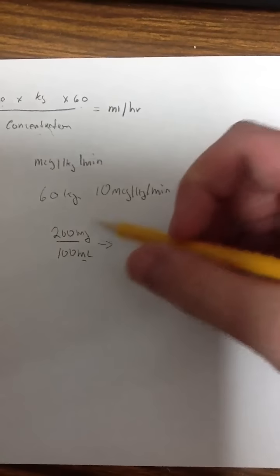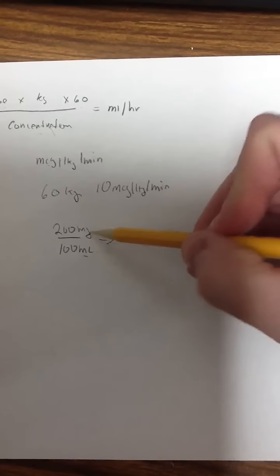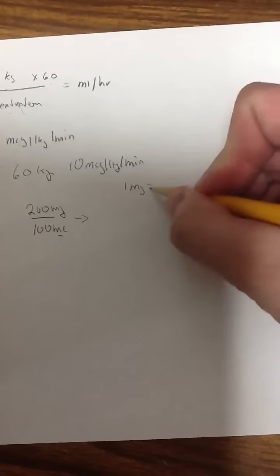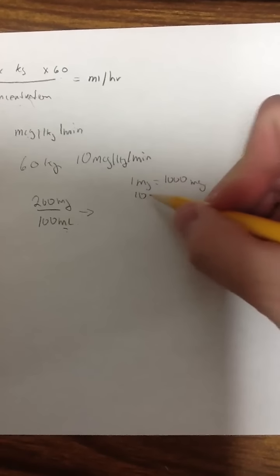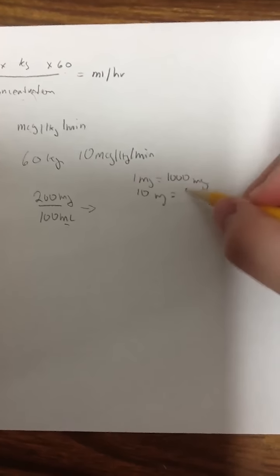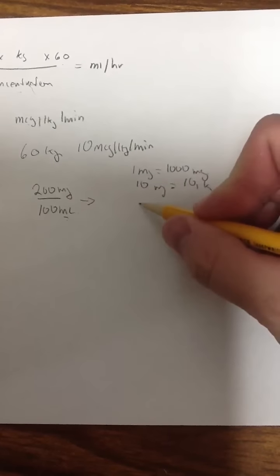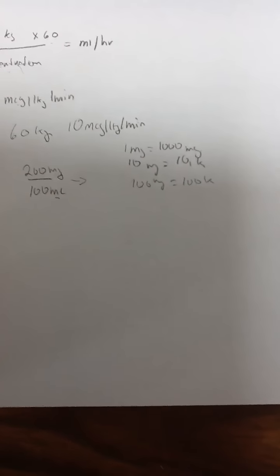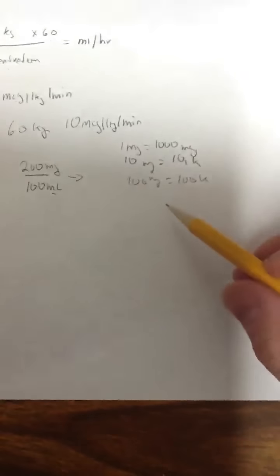Because we are running our infusion in micrograms per kilogram per minute, I need to convert this milligrams into micrograms. Well, let's remember, 1 milligram equals 1,000 micrograms. So 10 milligrams would equal 10,000 micrograms, and 100 milligrams would equal 100,000 micrograms. Just basic conversions here, no calculator at this point at all. So 200 would be 200,000.